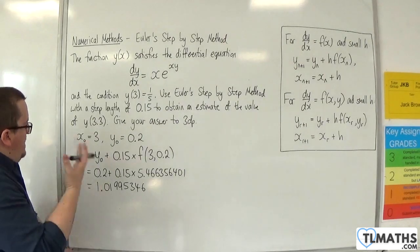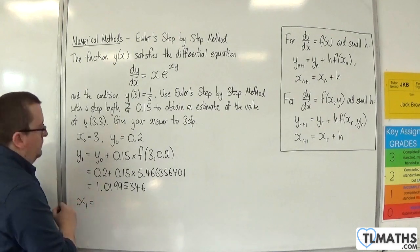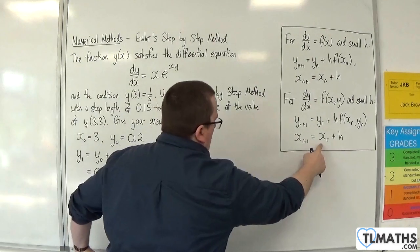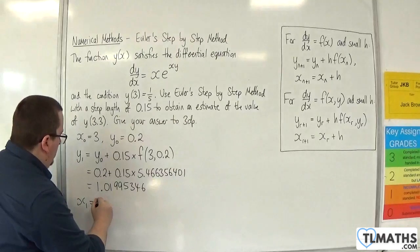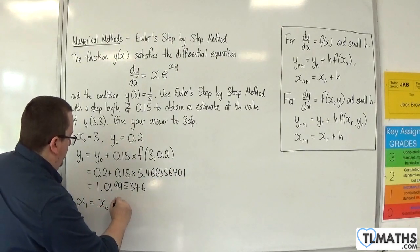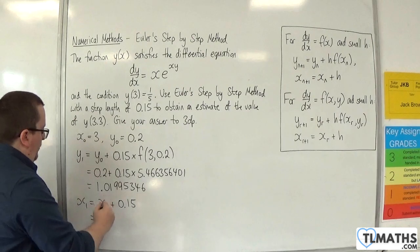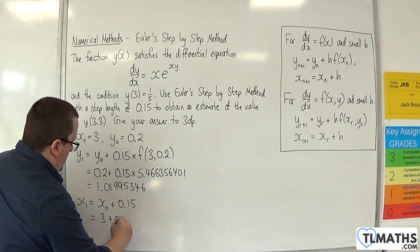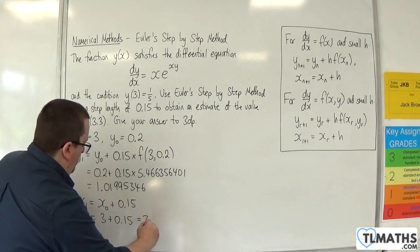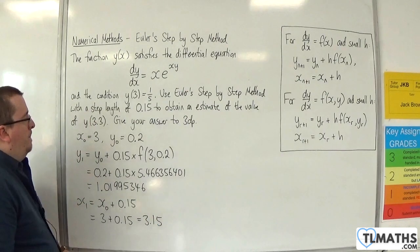So the next x value, so x₁, is the previous one, plus h. So x₀ plus 0.15. Now x₀ was 3. So this would be 3.15.